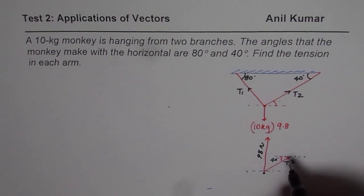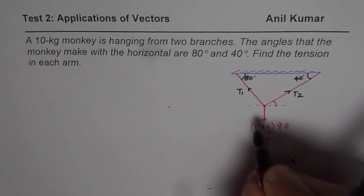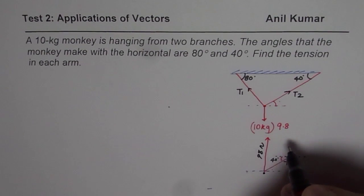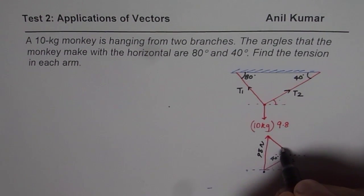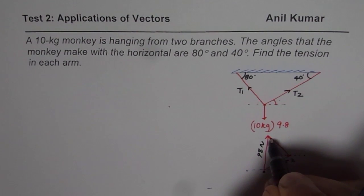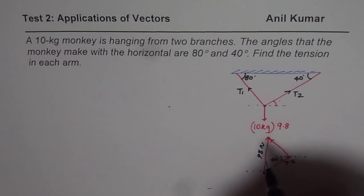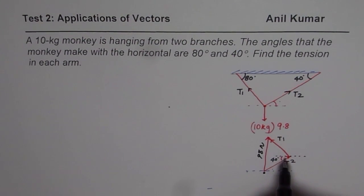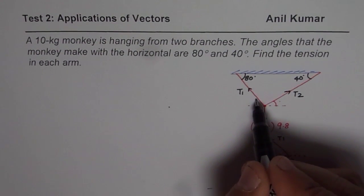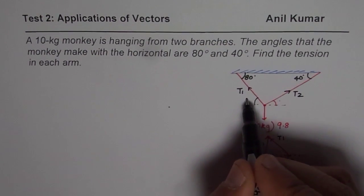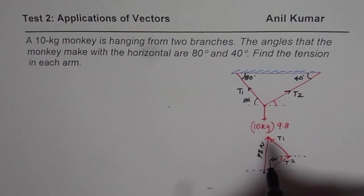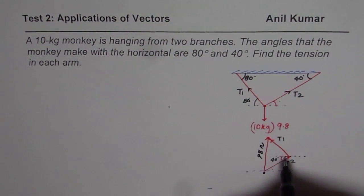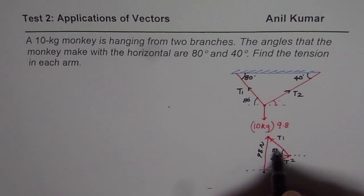Now from this point, we will draw a parallel line to tension T1 and it should intersect this. Then only they are in equilibrium. So that becomes the tension T1. The angle here should be how much? So if I am drawing this line, the angle here is 80. Alternate angles between parallel lines. So this angle is 80 degrees for us.